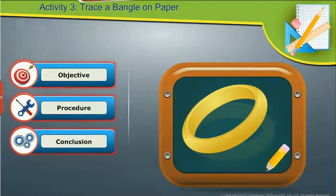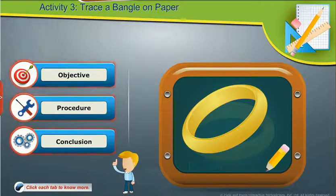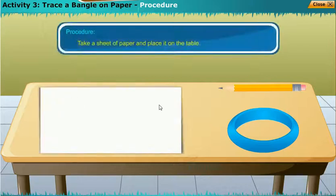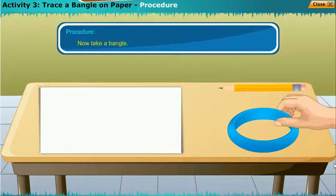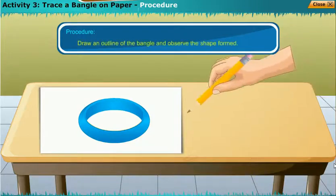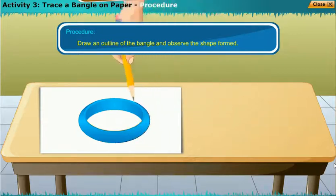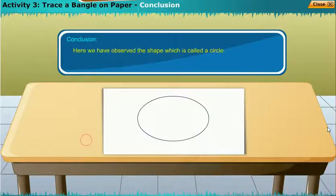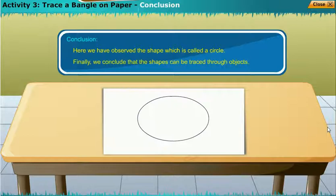Here we will do an activity to know how shapes can be traced through objects. Click each tab to know more. The main objective of this activity is to trace a bangle on paper. Take a sheet of paper and place it on the table. Now take a bangle and put it on the paper. Take a pencil or marker, draw an outline of the bangle, and observe the shape formed — a circle. We conclude that shapes can be traced through objects.